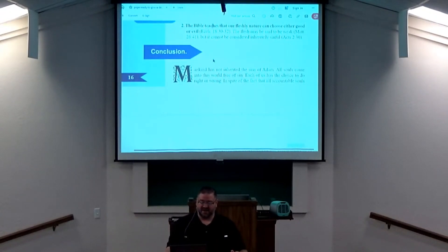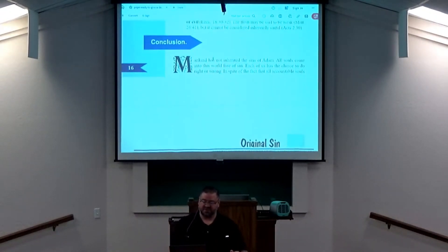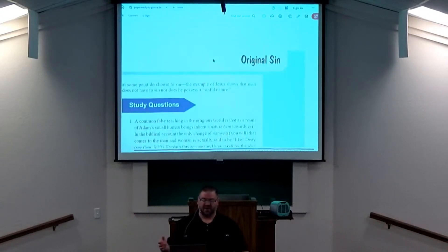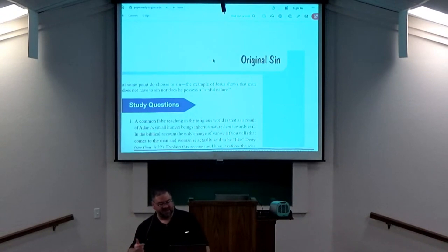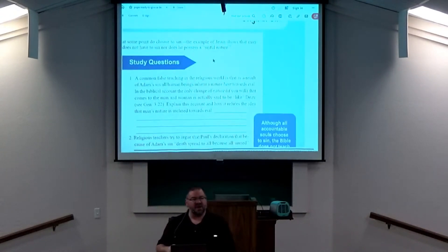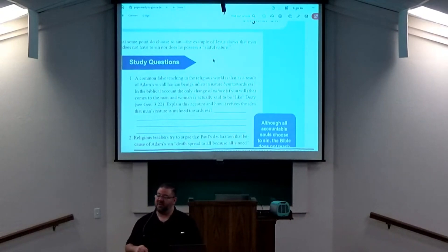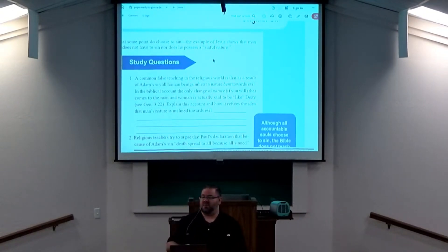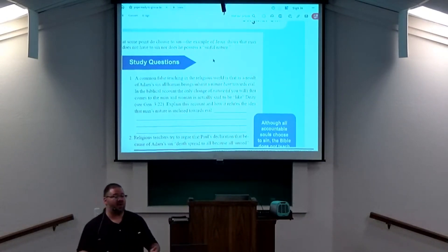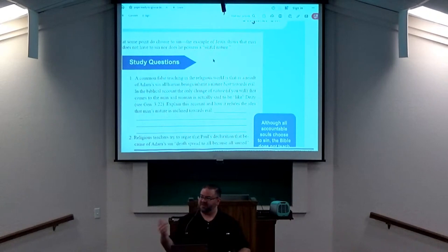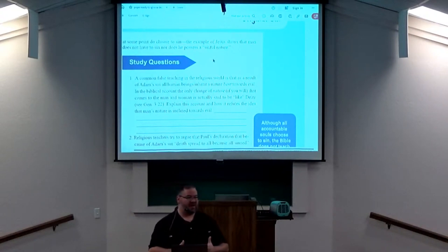In conclusion, he mentions, mankind has not inherited the sin of Adam. All souls come into this world free of sin. Each of us has the choice to be right or wrong, in spite of the fact that all souls are accountable at some point to choose to do sin. The example of Jesus shows that man does not have to sin, nor does he possess a sinful nature. There is one scripture that isn't mentioned in this chapter that we're going to bring up here with question one. There's a Psalm of David, Psalm 51, verse 5, where David says that he was born in what? His mother conceived him in sin, or iniquity. Next week, we'll pick up here with question one, and we're going to talk about this question and the idea of Psalm 51, verse 5, and how it relates, because I think it fits really well here with question one. All right. Thank you, everybody.